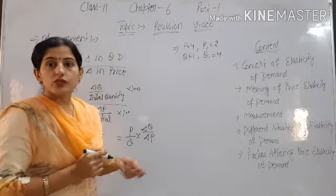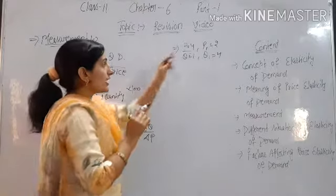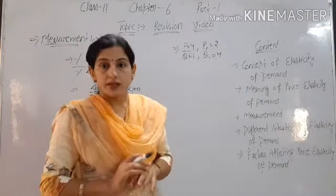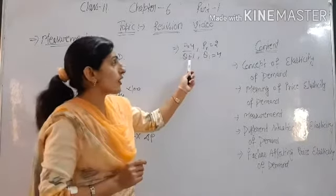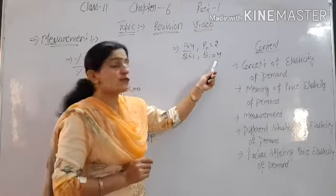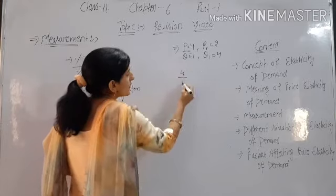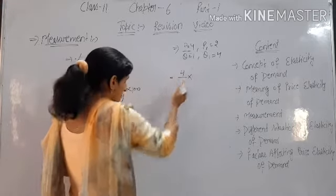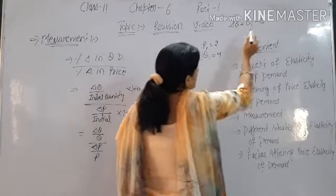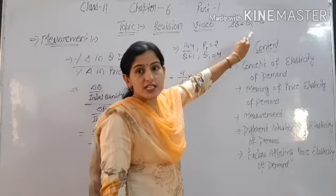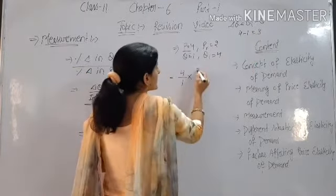We will do one numerical using this formula. We are given: initial price P = 4, which then decreases to P1 = 2, and initial quantity Q = 1, which changes to Q1 = 4. Using the formula P upon Q into change in Q upon change in P: P = 4, Q = 1. Change in Q = Q1 minus Q = 4 minus 1 = 3. Change in P = P1 minus P = 2 minus 4 = 2.